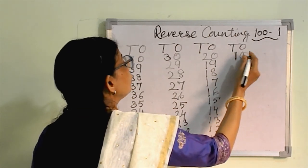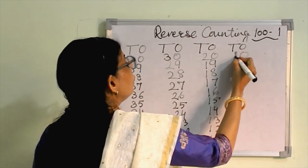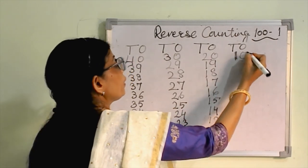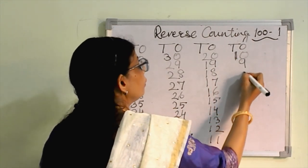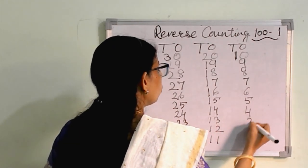Here we will write ten. And what comes before ten? Here we will write nine, eight, seven, six, five, four, three, two, and one.